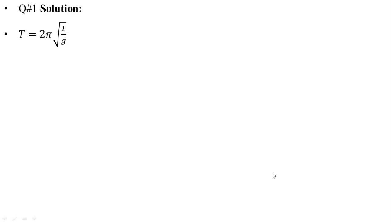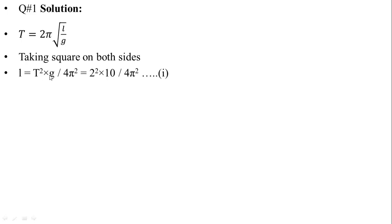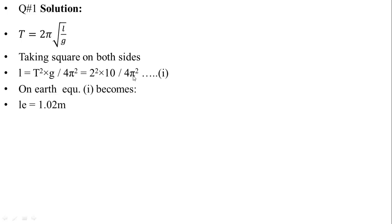Solution: t equals 2π times square root of L over g. Taking the square on both sides, we get L equals t squared multiplied by G upon 4π squared. Now calculating the length on the surface of Earth, putting the value of time period: 2 squared multiplied by ge value 10, divided by 4π squared. So Le is equal to 1.02 meters.